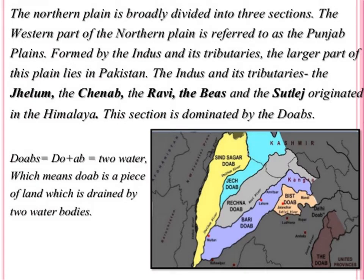The three river systems responsible for the formation of the North Plain are Indus, Ganga, and Brahmaputra. The Indus river system makes the Punjab Plain of India. The Punjab Plain is made by the Indus and its tributaries. The major tributaries are Jhelum, Chenab, Ravi, Beas, and Sutlej. All these rivers originate in the Himalayas. In Punjab, there are Doabs also.